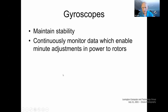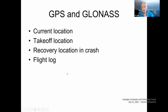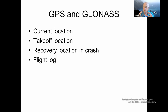The gyroscopes maintain stability and continually monitor data. The drone also communicates with global satellites — I didn't realize there were two systems, but my drone will communicate with both: the GPS and the Global Navigation Satellite System. The information recorded includes the current location of the drone, the takeoff location — which is critical because you want the drone to come home — the recovery location if the drone crashes (and I've had that experience; every drone operator will at some point), and a continuous flight log, which is really cool.